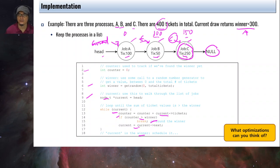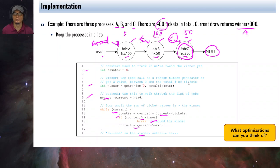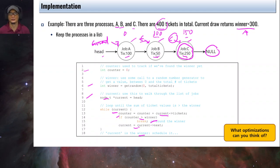This is an unordered linked list, so we can think of other possible optimizations to speed up the process of determining the winner for the lottery.